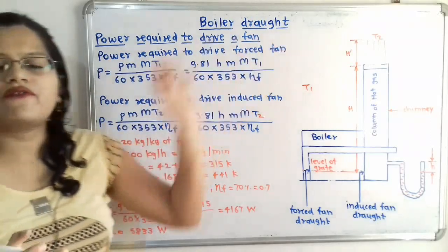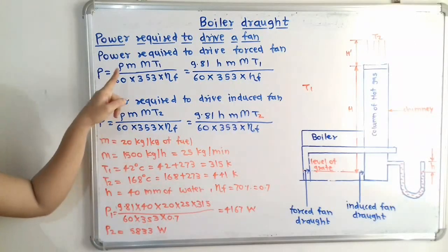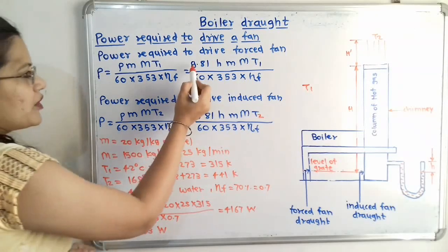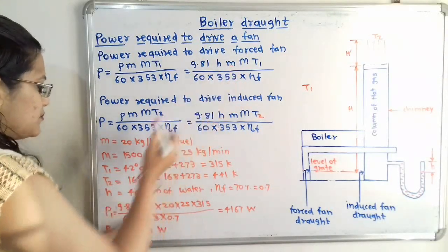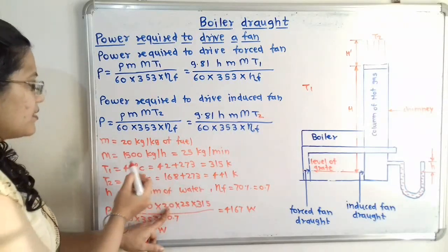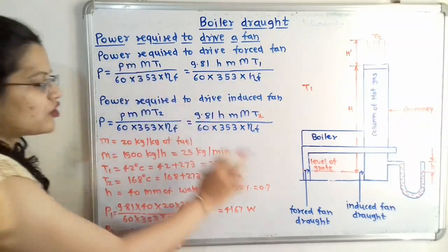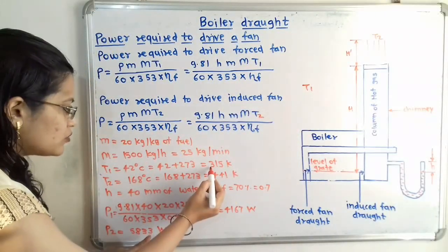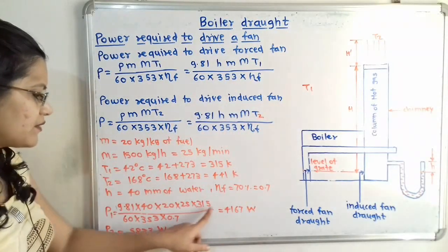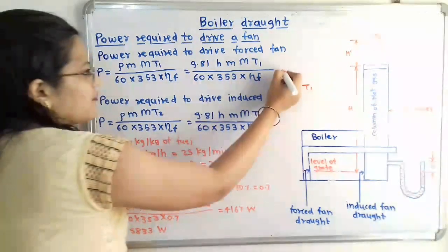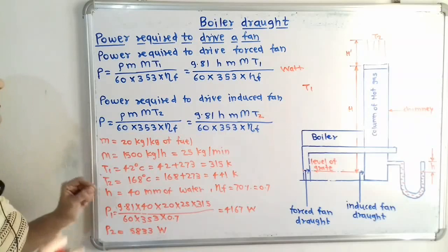For the forced draft fan, using P1 with the formula in terms of h: P1 = 9.81 × 40 × 20 × 25 × 315 / (60 × 353 × 0.7). Here T1 = 315 K is used since the forced draft fan relates to outside air. The result is P1 = 4167 watts.